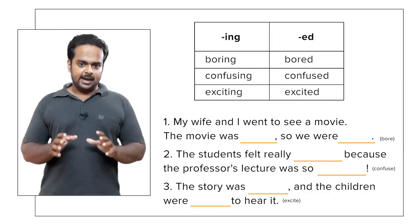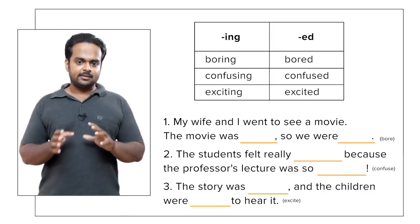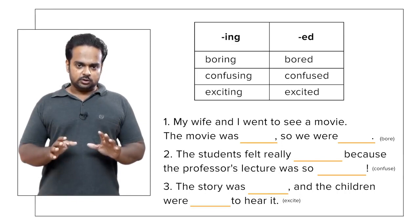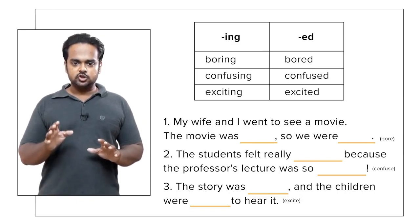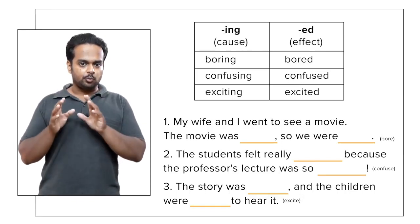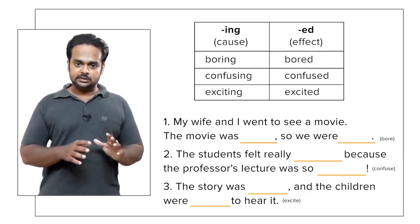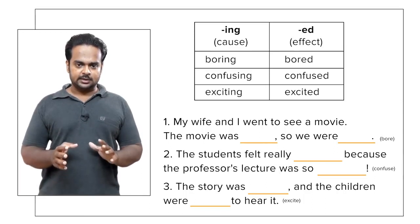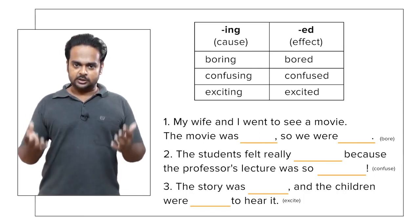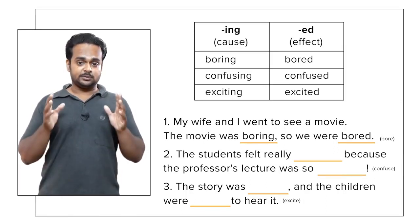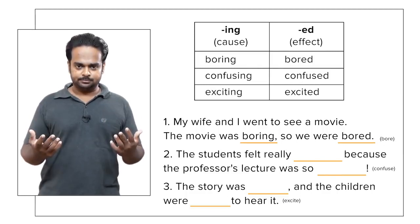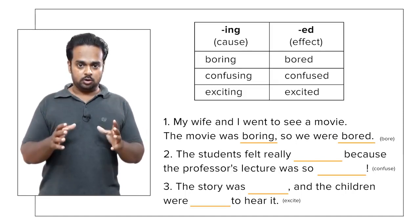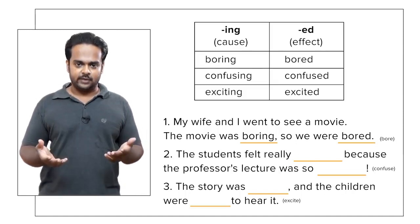OK, now before I give you the answers, let's first understand the difference between ed and ing adjectives. The difference is this: ing adjectives always show cause or reason, and ed adjectives show effect or result. So in the first sentence, my wife and I went to see a movie. The movie was boring, so we were bored. The movie was the reason or cause, and our feeling — bored — was the result or the effect.